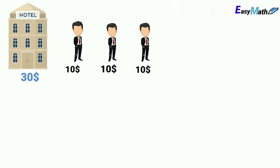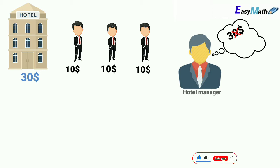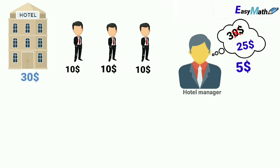So they each pay the hotel $10. But immediately after they make the payment, the hotel realized that they made a mistake and they overcharged these three friends for the room. The room really cost was $25 per night. So in order to make up for their mistake, the hotel decided to refund these three friends the $5 they were overcharged.